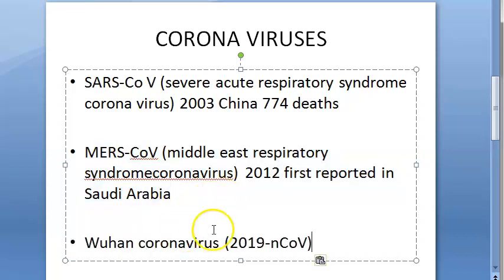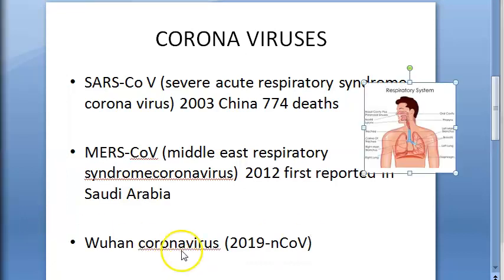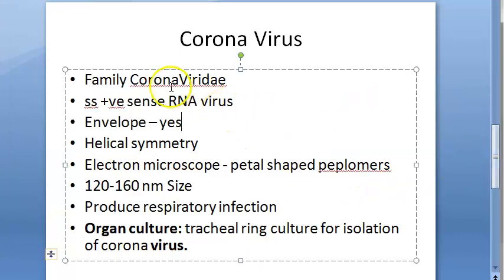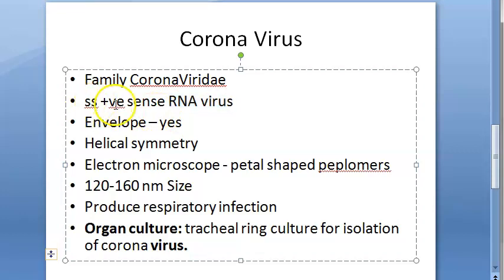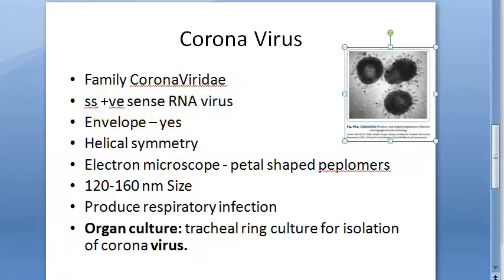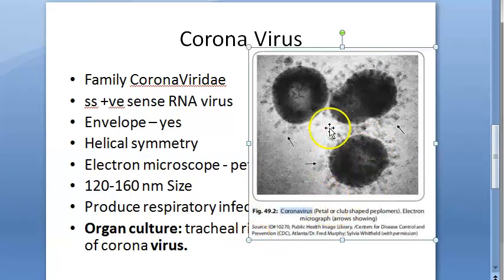Now they are calling it Wuhan coronavirus, 2019-nCoV, novel coronavirus. Let us move on to the microbiology of coronaviruses. This is under the family Coronavirus. These are RNA viruses — they contain RNA as the genetic material. They have single-strand RNA which is positive sense. These viruses have an envelope and helical symmetry. Under electron microscope, they look like petal-shaped peplomers — this is the identification.